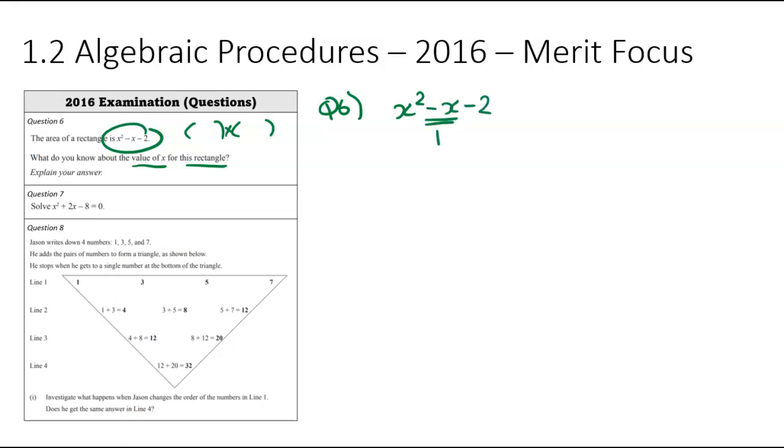So x squared minus x minus two. This here is thinking, well, what's going to add to negative one? What's going to multiply to negative two? And I'm thinking that's going to be negative two and positive one, which means my brackets will be x minus two, and then x plus one.